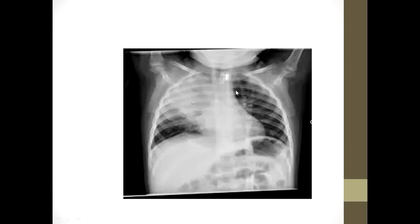Blood cultures are needed to confirm the diagnosis, though a negative blood culture does not rule out bacterial infection. This chest X-ray of a child shows the cardiac shadow and lung fields — the left side appears relatively clear, while the right side shows a white opacity in the upper zone, involving the whole upper lobe of the right lung. There are homogeneous opacities, air bronchograms, and the silhouette sign where the heart border is obscured — all classic radiological findings of consolidation.